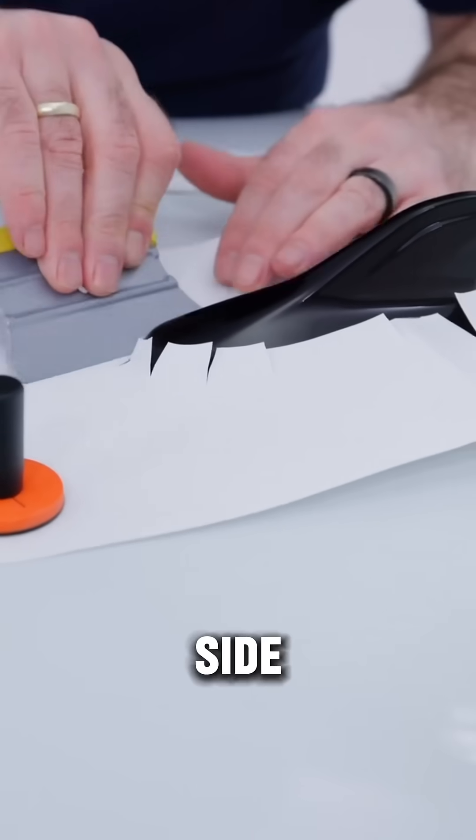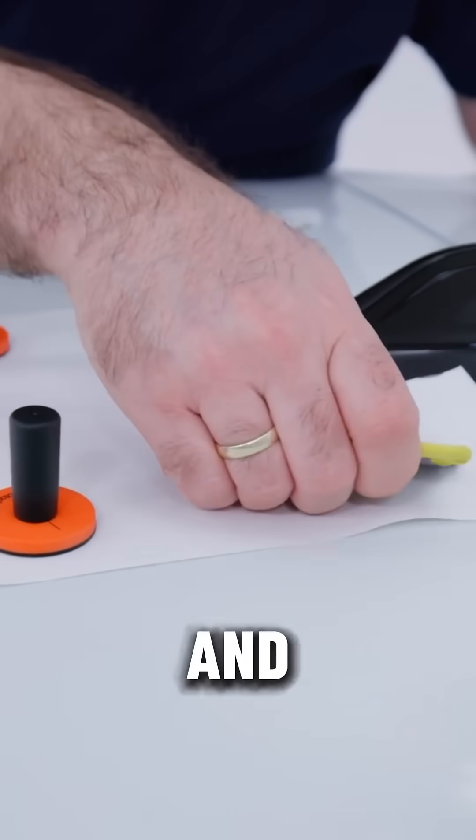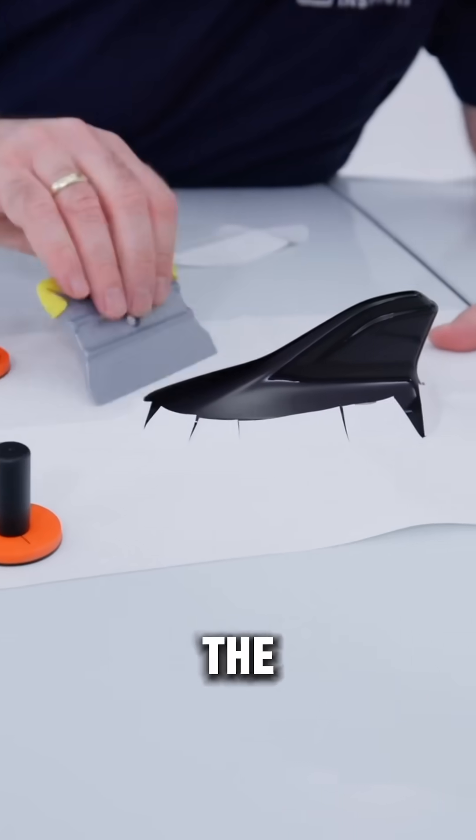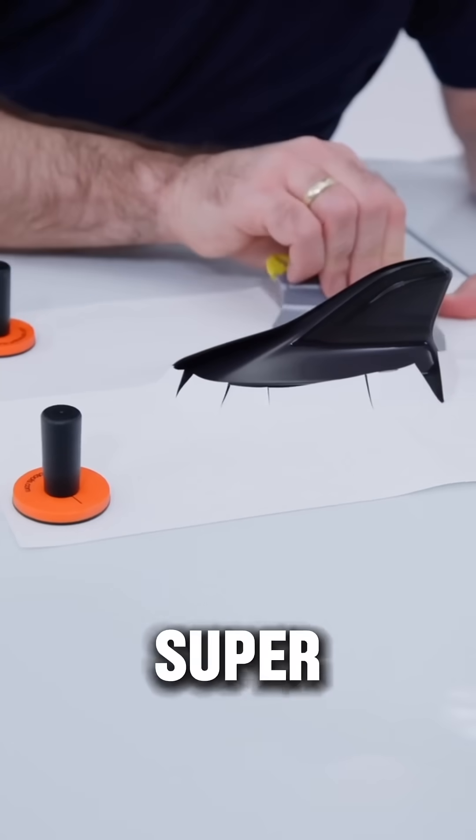And now he takes the hard side of the platinum squeegee in this case, and he's basically going to crease the liner to the base of the antenna. And that's where those relief cuts are super, super smart.